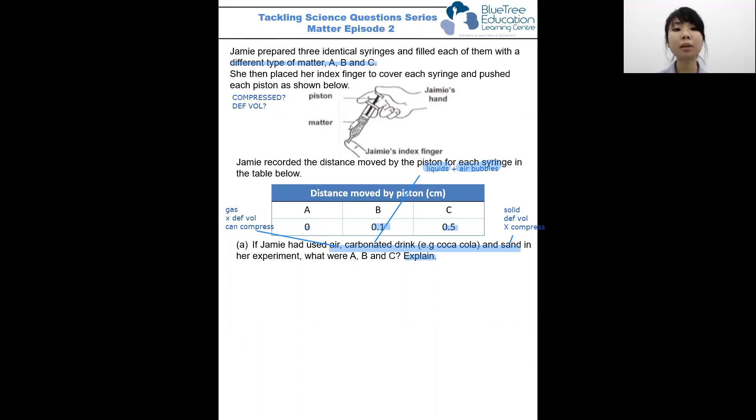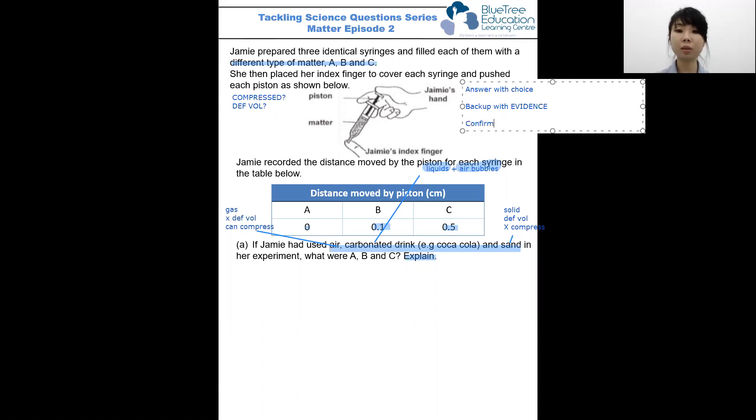So how do we actually present our answer in such a way that all the key points are covered? We will take the A, B, C approach, which is we answer with choice—we answer the question what is A, B, and C respectively. We back up our answer with evidence from the table, so how much the distance moves in each case, and finally we confirm with concept. What is the key concept that allowed us to arrive at our answer?